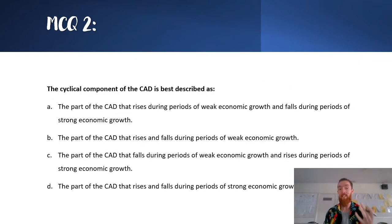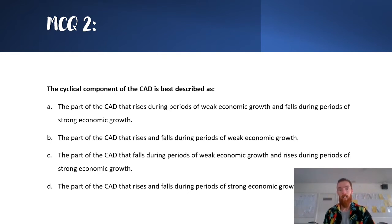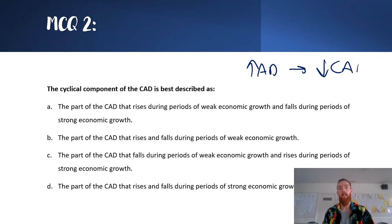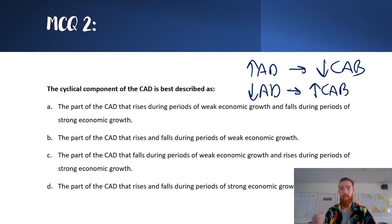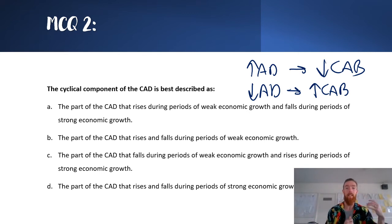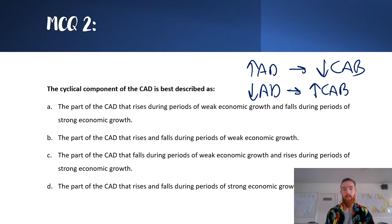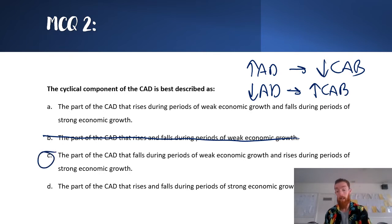Another multiple choice question: 'The cyclical component of the current account is best described as...' The current account in times of increasing aggregate demand tends to fall or move more towards a current account deficit; in times of falling aggregate demand, it tends to rise or go into a larger surplus. That's because when there's increasing aggregate demand, people borrow more, invest more, creating more liabilities, and spending spills over onto imports. So the correct answer is: the part of the CAD that falls during periods of weak economic growth and rises during periods of strong economic growth.